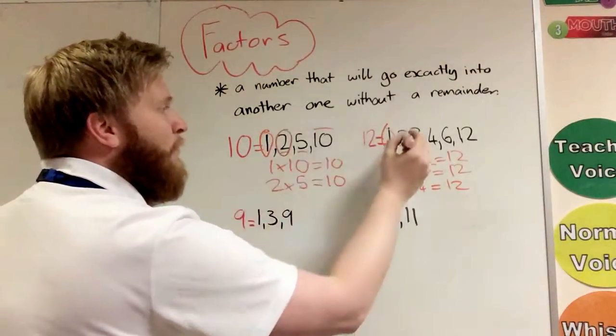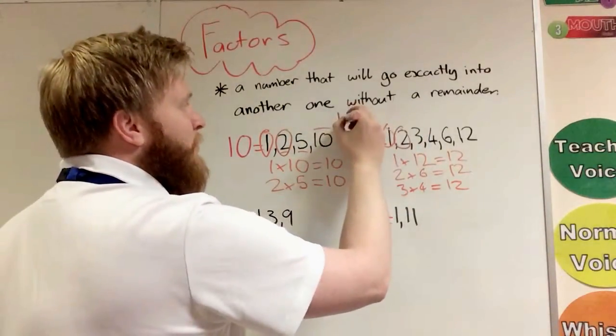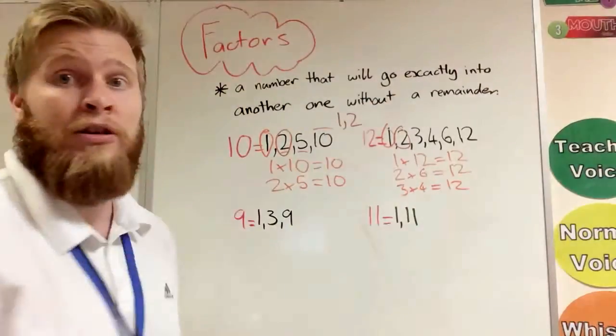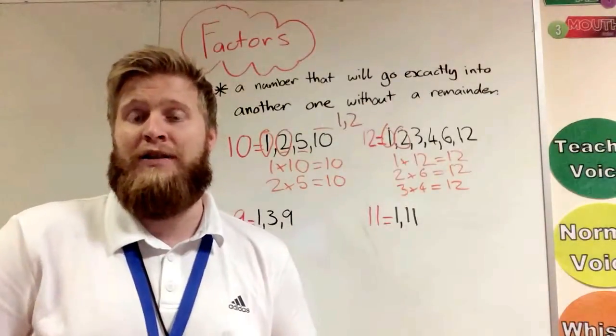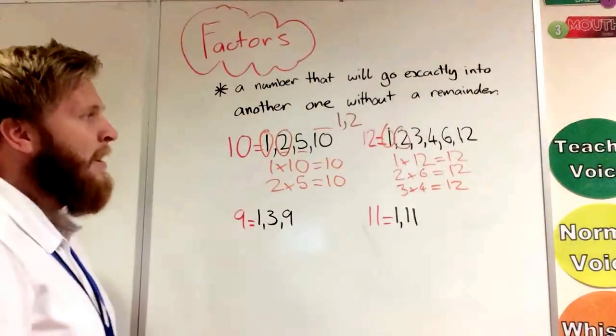So if we have a look at these, we have 1, 2 is in both of those lists, 5 isn't, 10 isn't. So the common factors of those two numbers would be 1 and 2. And that's what a common factor is.